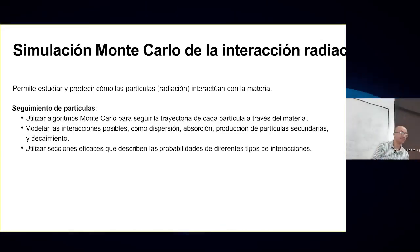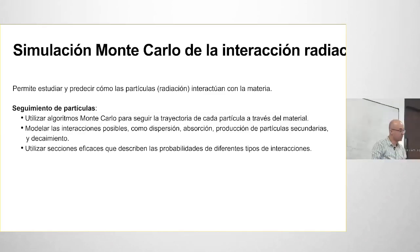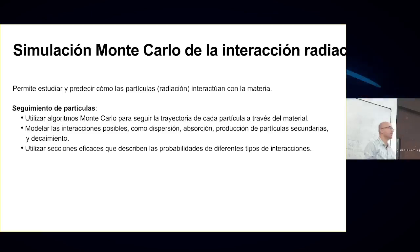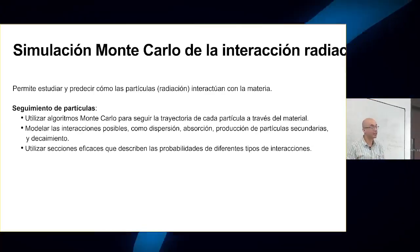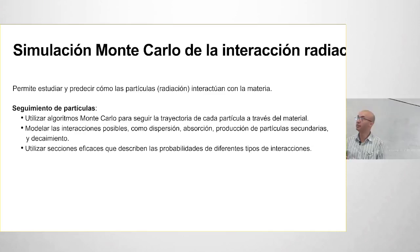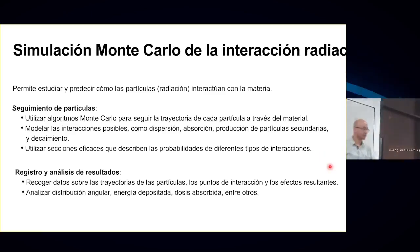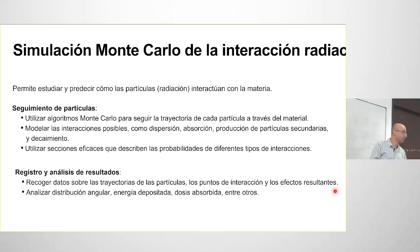From particle tracking we can determine quantities such as the energy deposited by a particle at each step along its trajectory, secondary particles produced in a reaction, and many other output quantities. Cross-sections are used to describe which types of interactions will occur, and the final step is data recording and histogram analysis.